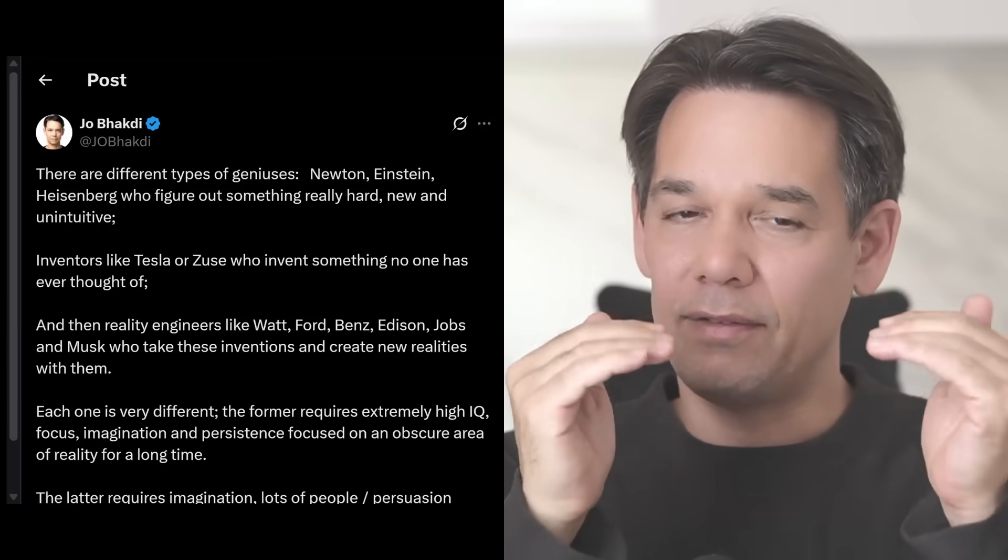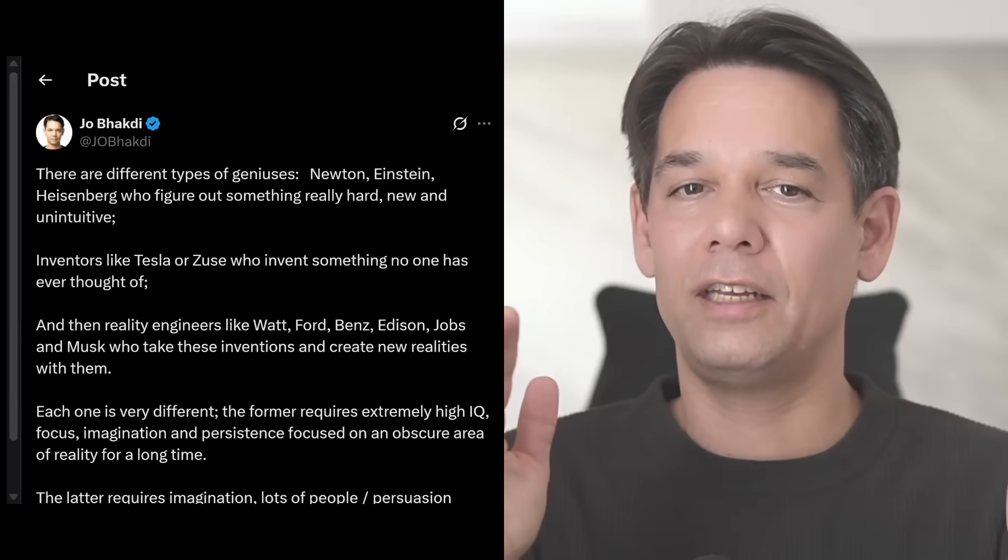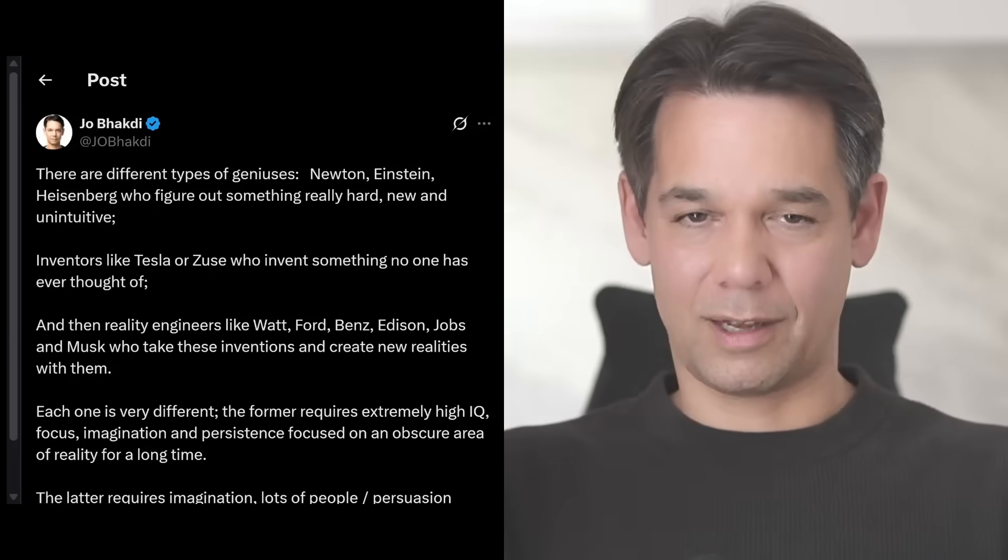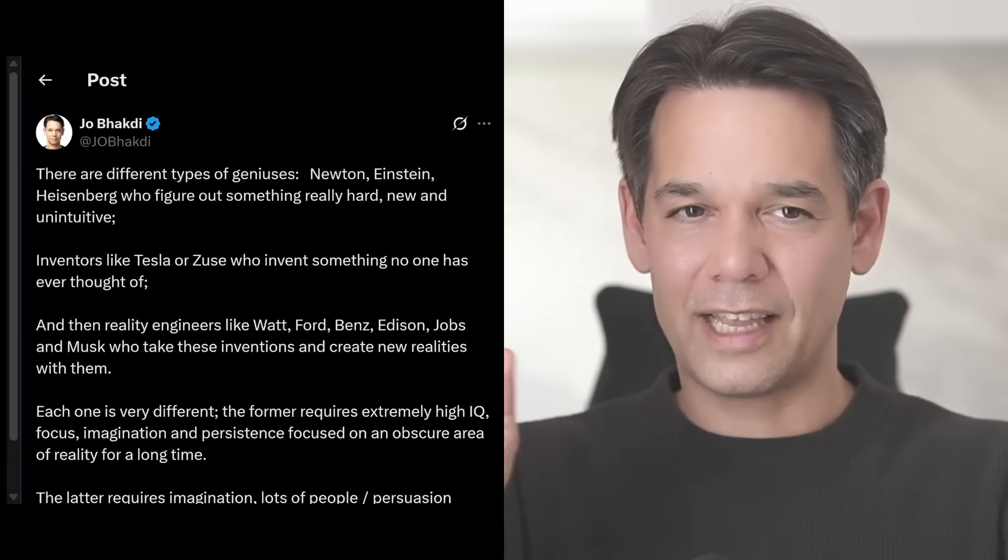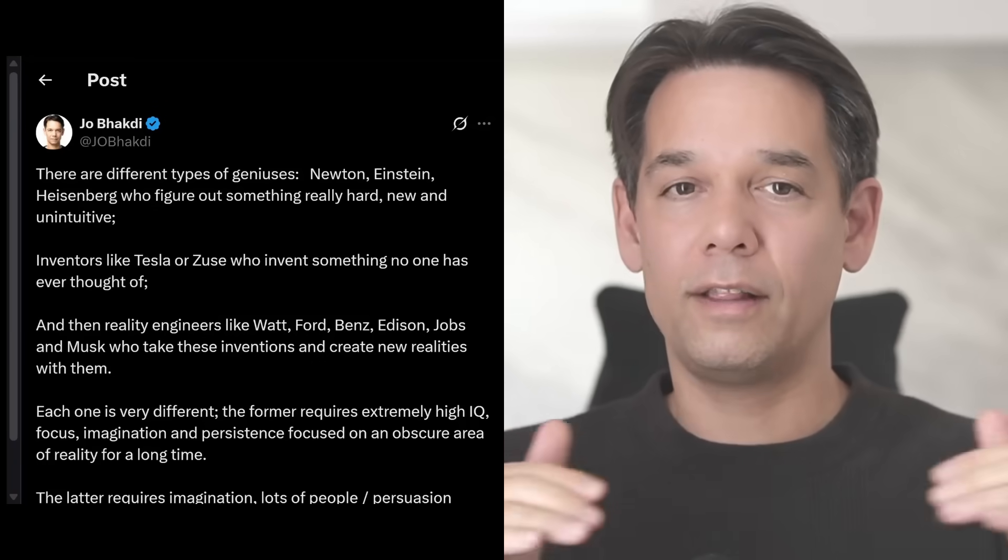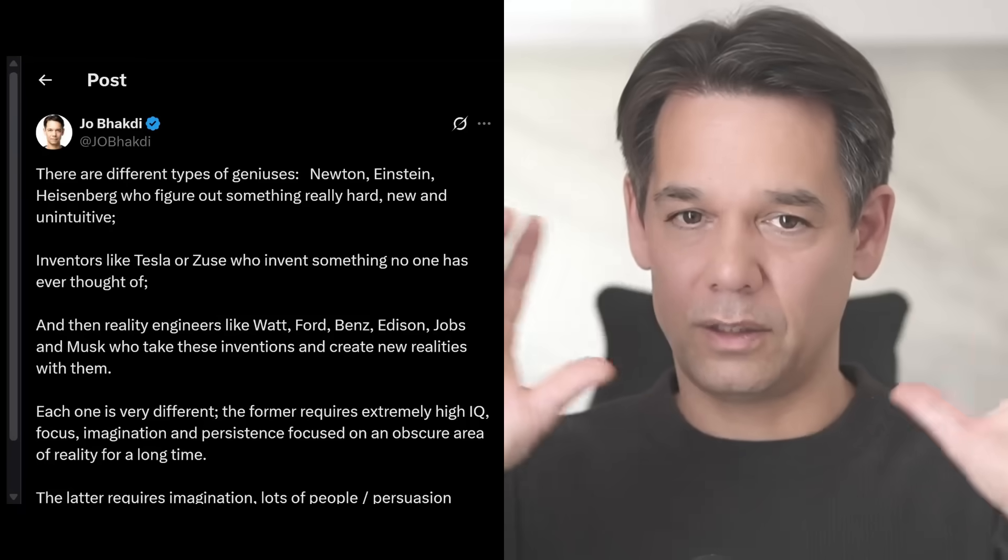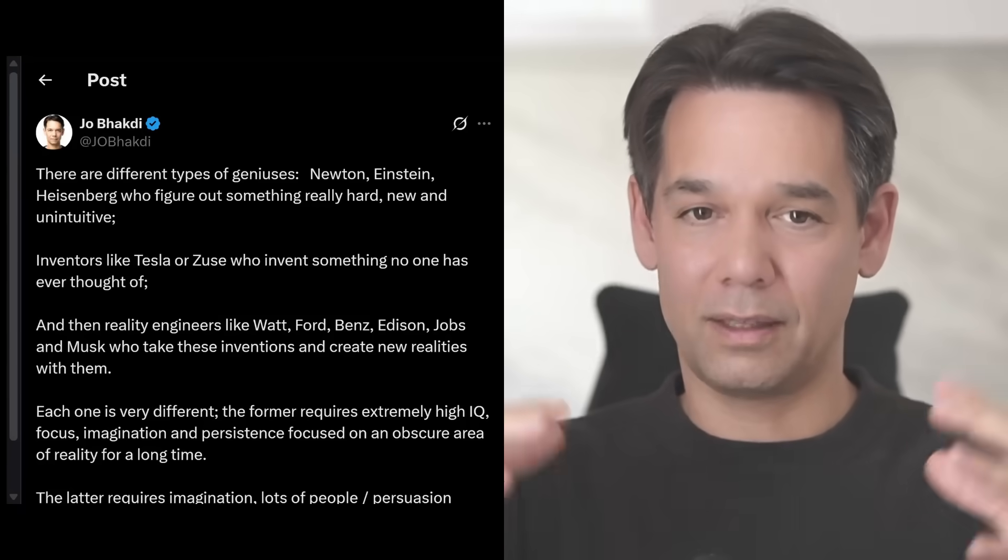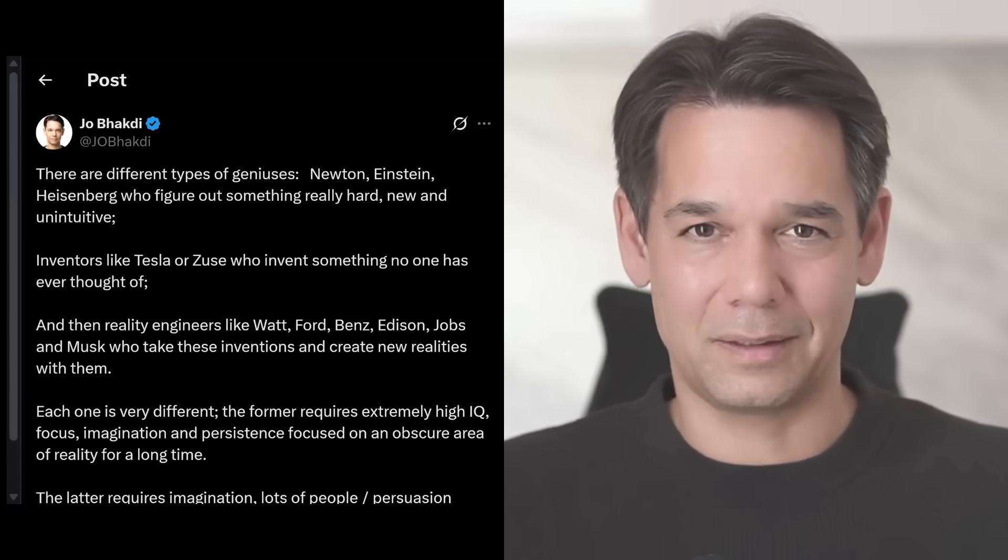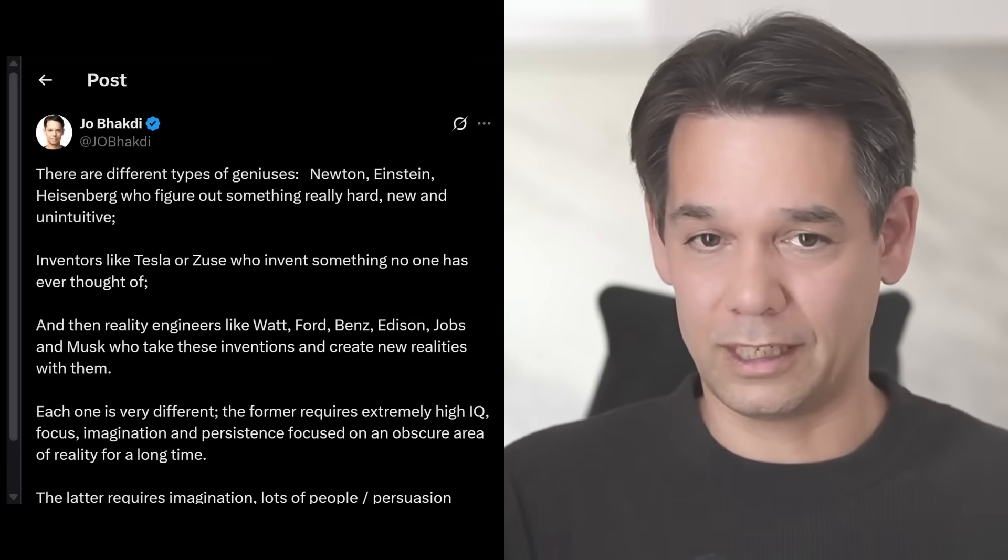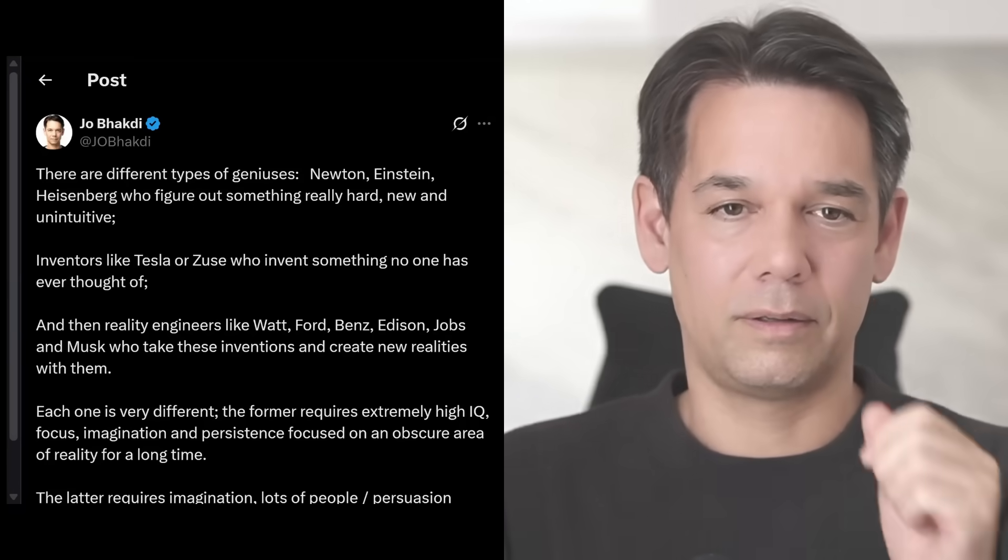He had everything at his disposal. But he recombined the components of reality in a way created a completely new reality. So these type 3 geniuses, they shine the most when they find something where all the key inventions have been already achieved. All the scientific discoveries needed for the new reality are already there. And then they just bring it together, which is an enormous complicated skill, by the way. Maybe the most valuable skill of all. But it's not these other two.